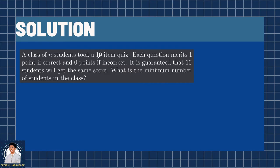First, we know that there are 10 items in the quiz and we can get 1 point or 0 points. So, we have these possible scores: 0 points if you get nothing correct, 1 point if you get 1 question correct, 2 points, 3 points, 4, 5, 6, 7, 8, 9, and 10. So, there are 11 possible scores for this quiz.